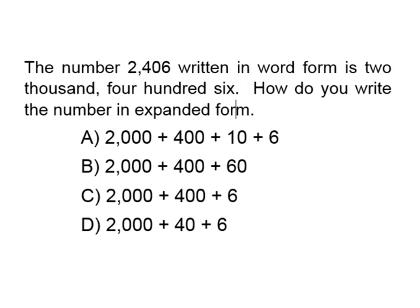The number 2,406 written in word form is two thousand four hundred six. How do you write the number in expanded form? A is two thousand plus four hundred plus ten plus six. B is two thousand plus four hundred plus sixty. C is two thousand plus four hundred plus six, and D is two thousand plus forty plus six.